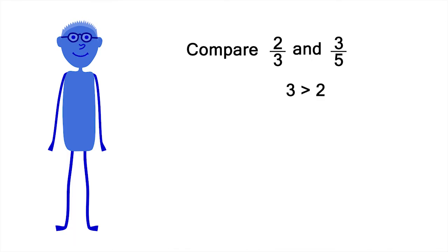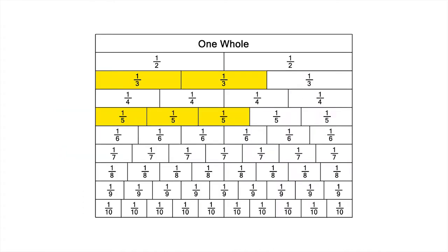You might reason that three is bigger than two, so three-fifths must be bigger than two-thirds. But this reasoning is wrong. Comparing these fractions on the fraction wall, you can see that three-fifths is actually smaller than two-thirds.